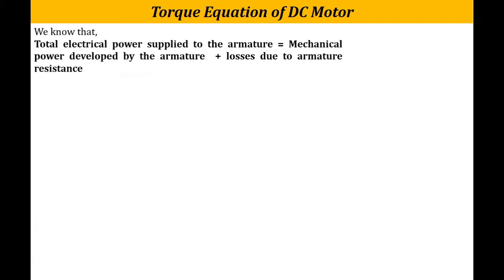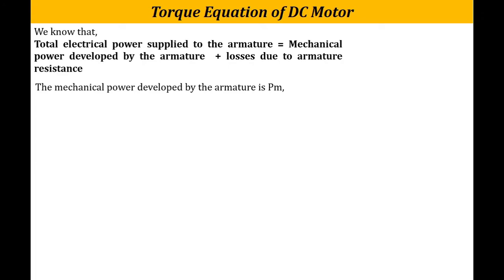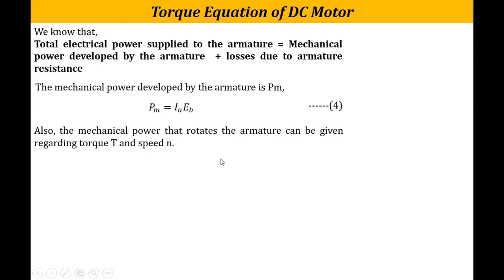The total electrical power supplied to the armature resolves into two components: first, the mechanical power developed by the armature; and second, the losses due to armature resistance. The mechanical power Pm developed by the armature is given by Pm = Ia × Eb (equation 4). We also know that mechanical power can be expressed in terms of torque T and speed: Pm = ω × T = 2πn × T, where n is speed in revolutions per second.